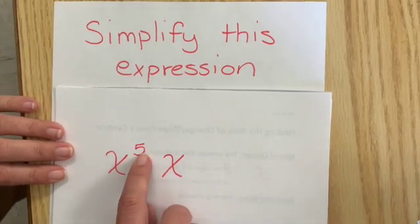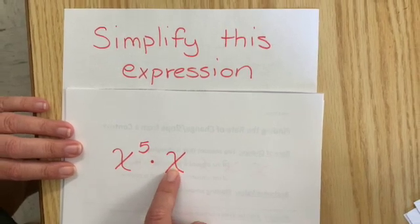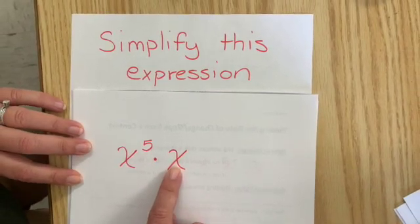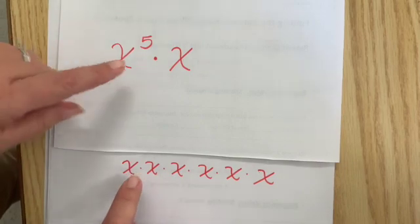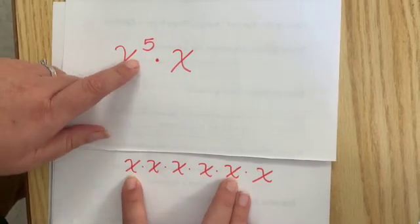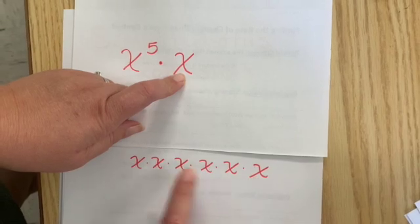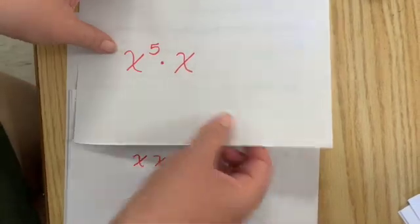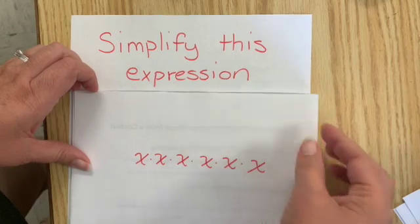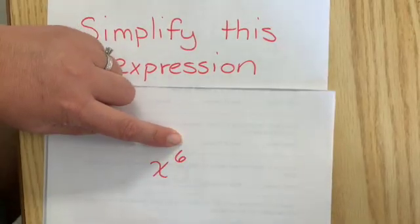The next example is x to the fifth times x. So write this out in expanded form. We would have x to the fifth, so we would have five x's times an extra x out here. And then we would write this with just an exponent and get x to the sixth power.